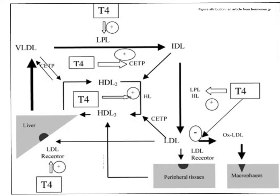T3 and T4 have a positive effect on lipoprotein lipase (LPL). The normal function of LPL is to act on triglycerides present in VLDL and convert them into IDL. Also, LPL attached to the endothelium of blood vessels — activated by ApoCII — acts on chylomicron triglycerides and converts them into chylomicron remnants.